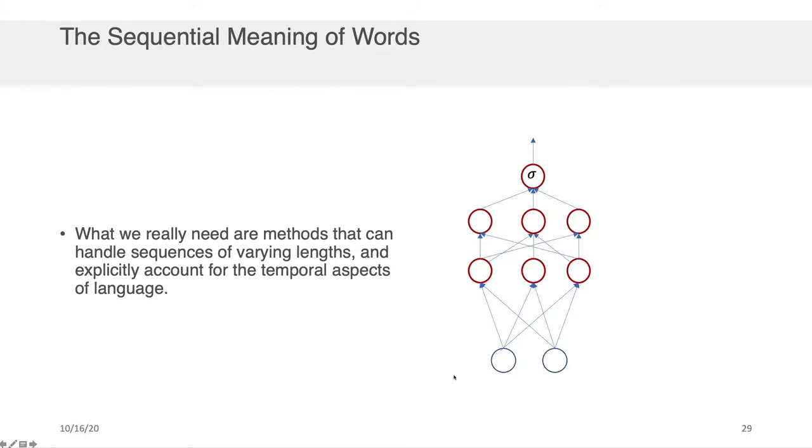So what we really need if we want to solve this problem effectively are methods that can handle sequences that are varying lengths and that explicitly account for the temporal aspects of language. That is, we want to move beyond just thinking about context in terms of windows to context in terms of the sequence of things that preceded this particular incident.